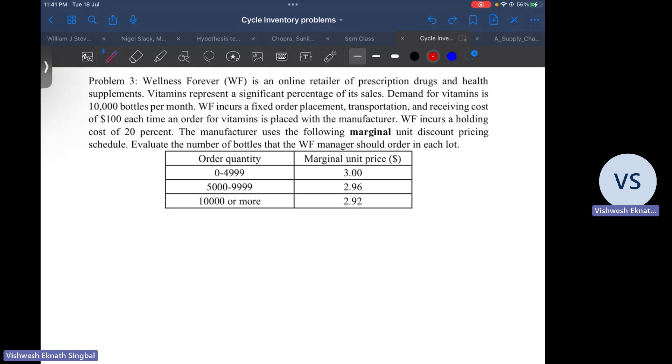So what does it mean? Wellness Forever is an online retailer of prescription drugs and health supplements. Vitamins represent a significant percentage of their sales. The demand for vitamins is 10,000 bottles per month. It incurs a fixed order placement, transportation, and receiving cost of $100 each time an order is placed. It incurs a holding cost of 20 percent. The manufacturer uses this marginal unit quantity discount scheme.